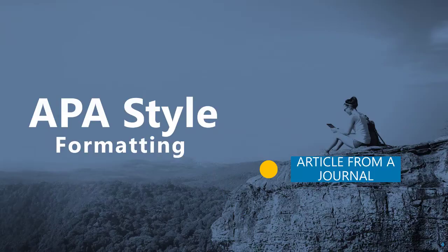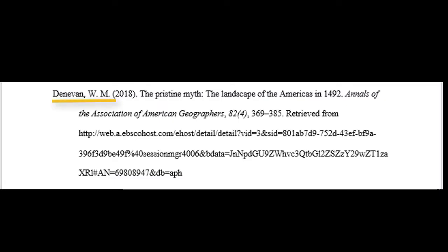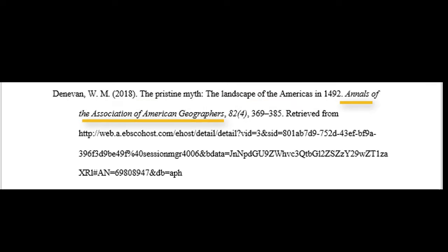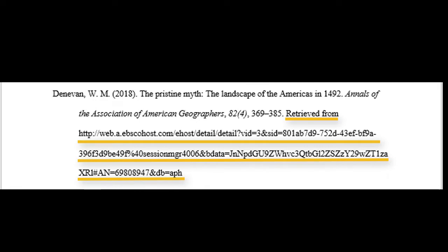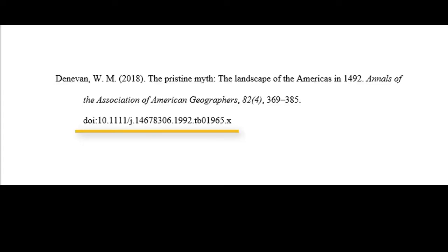The source that you'll probably refer to the most for your research papers is the journal article from our database. Begin with the author's last name, followed by their first initial. We follow that with the date of publication in parentheses. Next is the title of the article written with sentence capitalization — meaning the first letter is capitalized and everything after that is not. An exception is that you capitalize the first letter of the word after a colon if you have one. Add a period, then the journal title in italics, a comma, the volume number, and the issue number in parentheses, and then the page numbers. Write 'retrieved from' and copy and paste the URL. In APA style, if the DOI is available, add that to the end of the entry in place of the URL.